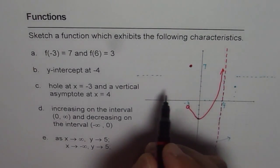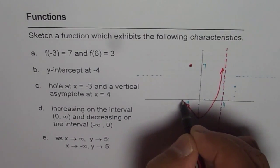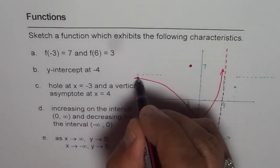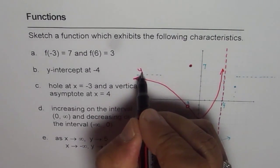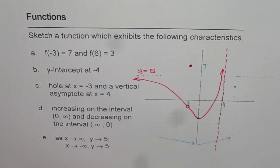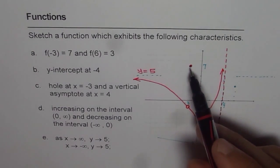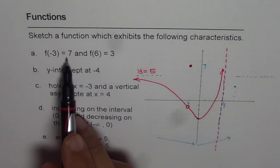And now we have to have horizontal asymptotes. So what we can do is we can just connect this with this, saying that this is the horizontal asymptote for y equals 5. And we have this point which satisfied y equals -3 is 7.